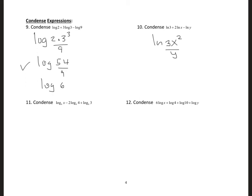The next one: we are condensing to logarithm to base 6 of x, and I'm dividing by 4 — using the power property, that's 4 squared, so 16 — and then multiplying by 3. This simplifies to logarithm to base 6 of 3x over 16.